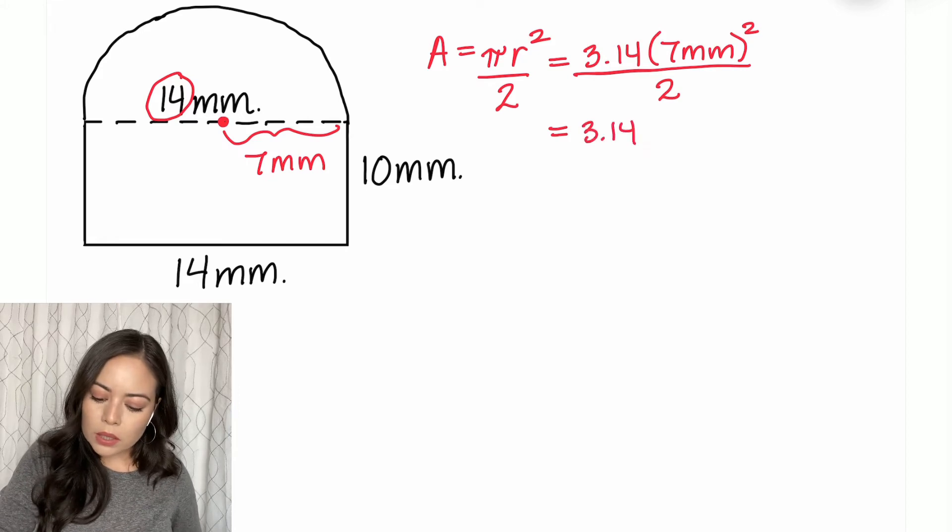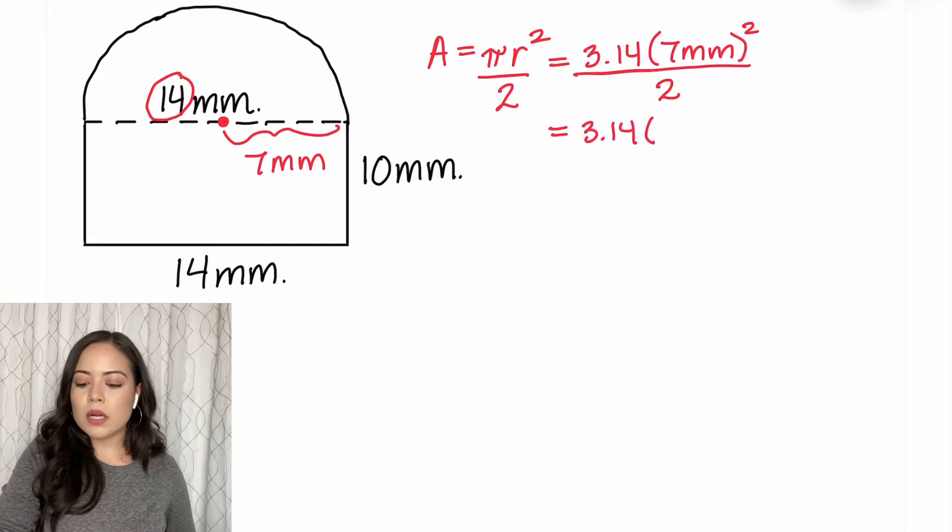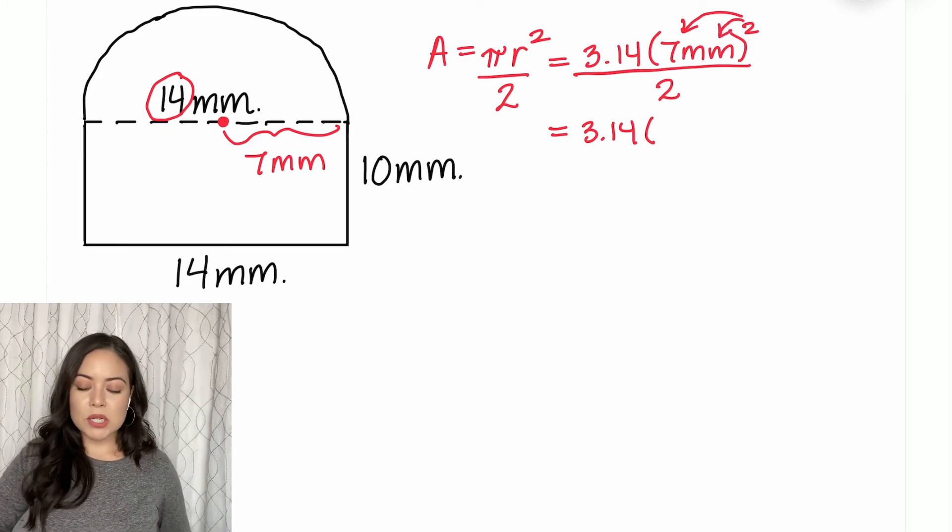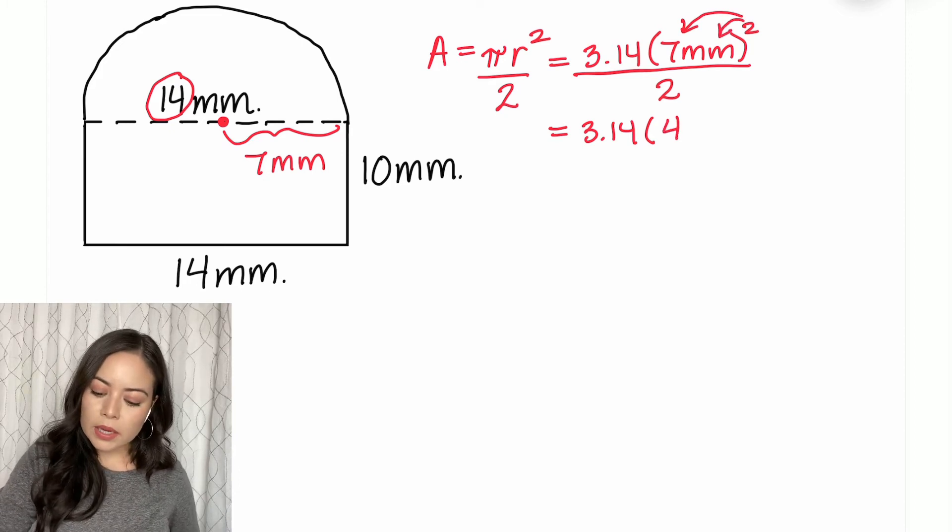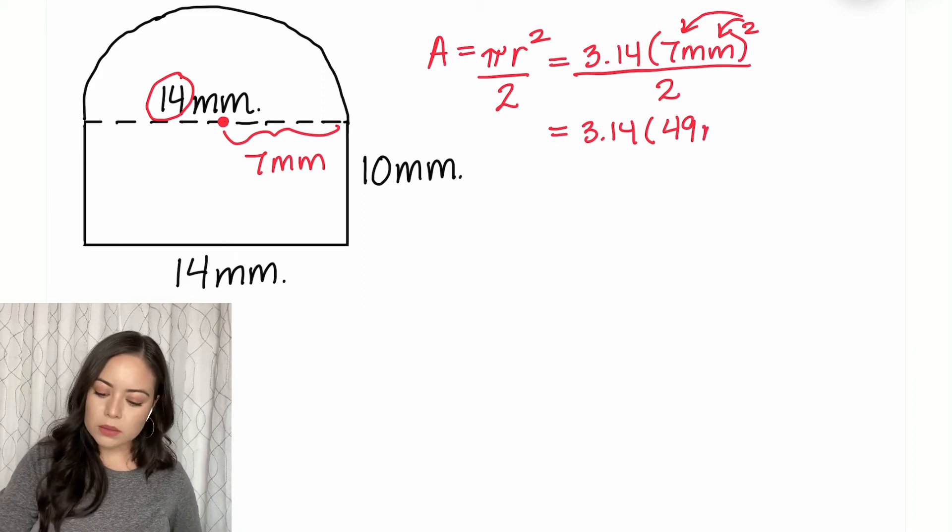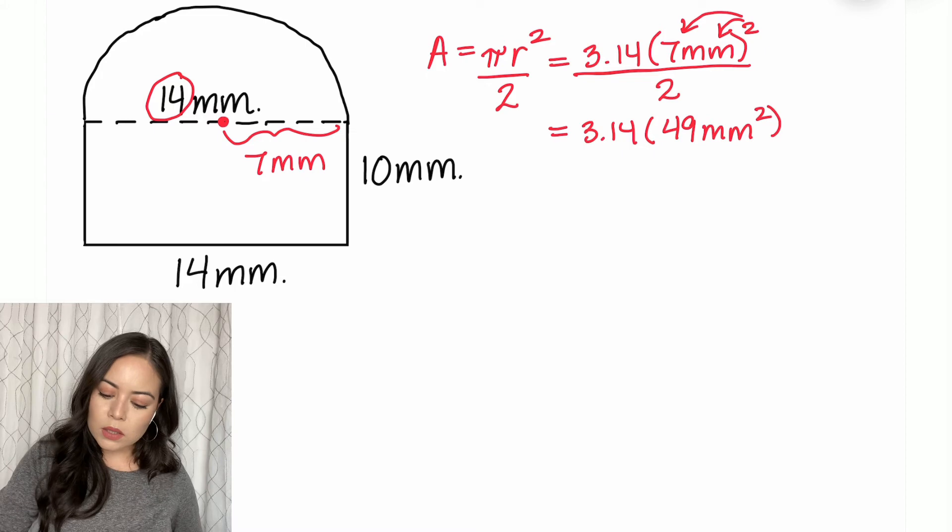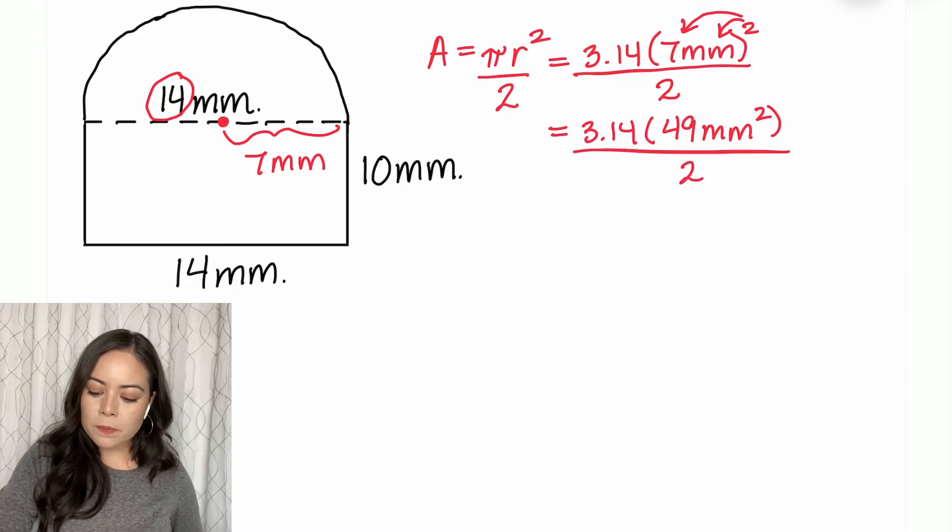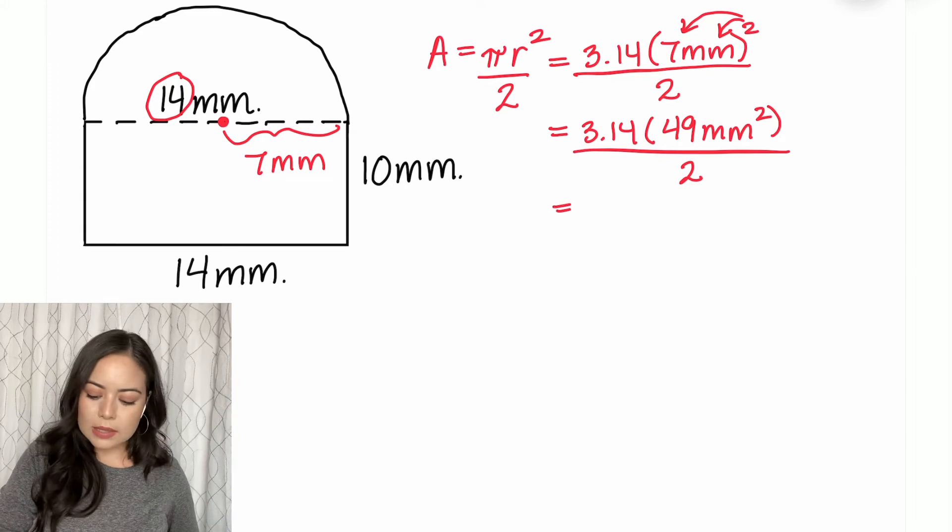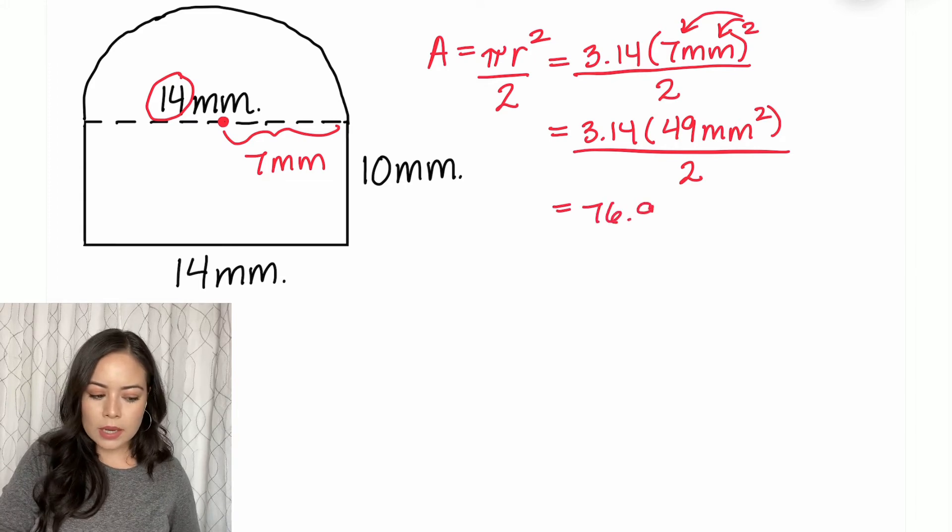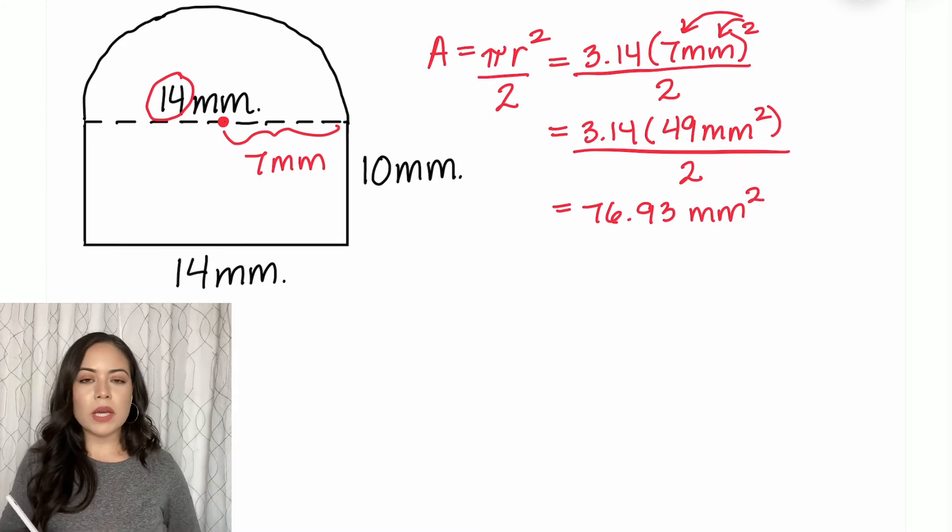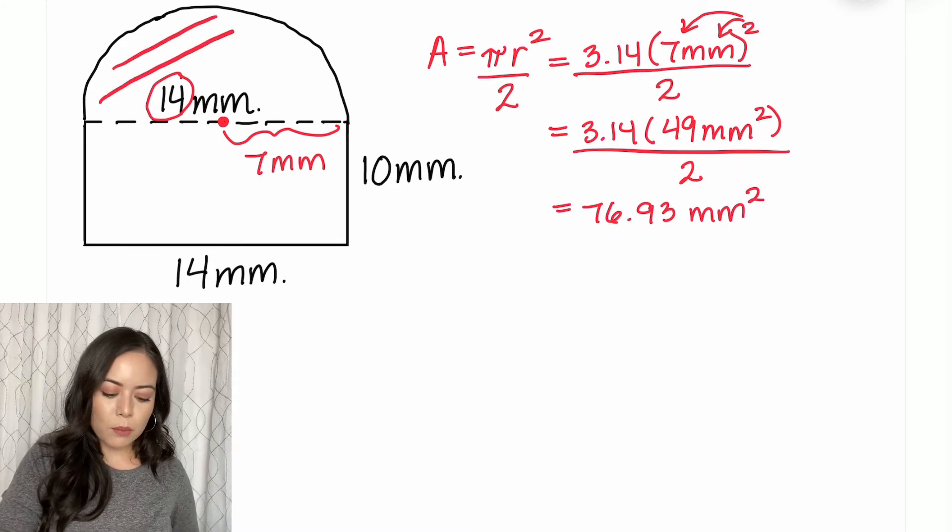I'm going to simplify. When squaring, that needs to be distributed to both the number and the measurement. So 7 squared is 49, and millimeters squared is millimeters squared. All in parentheses, divided by two. Putting these values into your calculator, you get 76.93 millimeters squared. So we just found the area of that semicircle, which is this top portion.